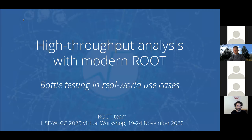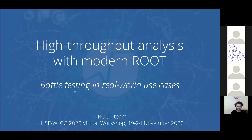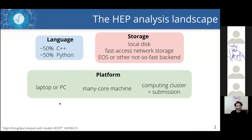Welcome everybody, I am Vincenzo from the ROOT team. Today I want to talk about high throughput analysis with modern ROOT. The analysis landscape in high energy physics is very diverse — we have different programming languages, mainly C++ and Python, different means for data storage like local disks, network storages, EOS or any other backend, and different platforms from a user's laptop to a many-core machine to a computing cluster.